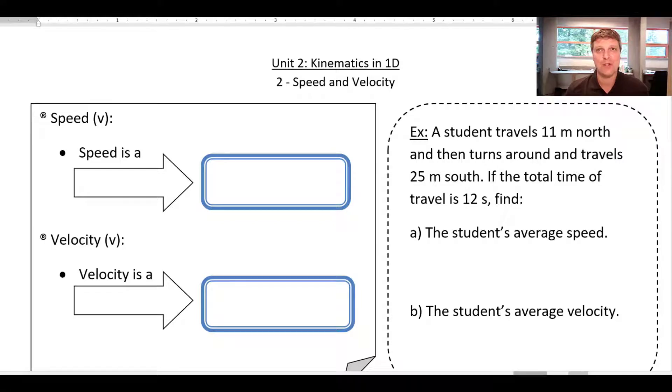So last time we talked about scalars and vectors and how there's different quantities. Depending on what information they have, they're going to be either a scalar or a vector. Scalars have an amount, just a magnitude. Vectors have an amount and a direction. Some of the things that we think of as having the same meaning in everyday life, it turns out in physics, might have very different meanings.